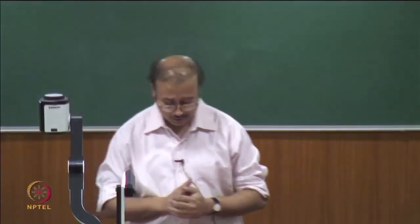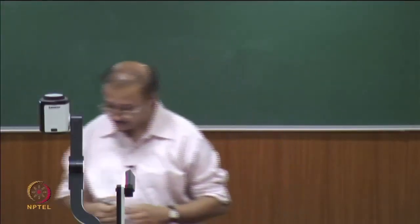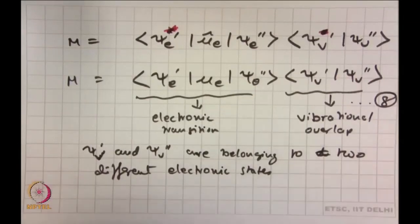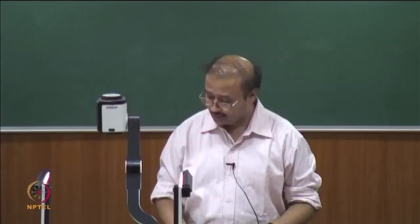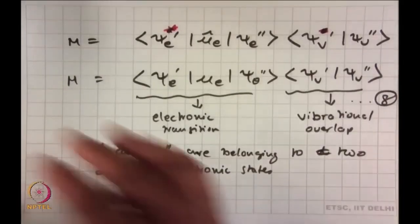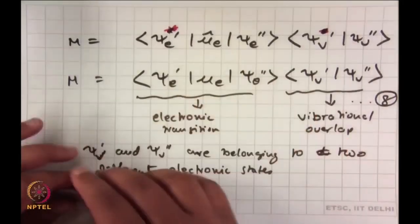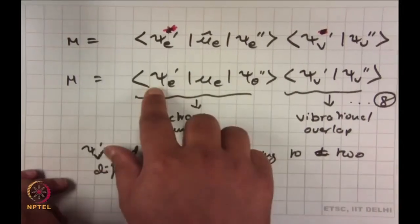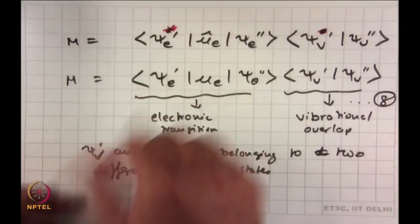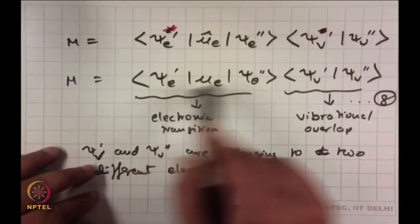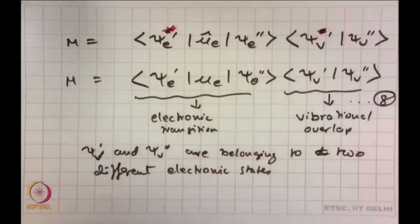We will continue with the discussion on the Franck-Condon Principle. If you remember what we did last class, we had derived this relation for a transition moment, and you can see that this transition moment had this final expression. It could be grouped into two parts. The first one has the electronic dipole moment operator, where E stands for electronic. So in Dirac notation: psi electronic prime (excited state), then the mu_E operator, then psi electronic double prime (ground electronic state).